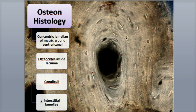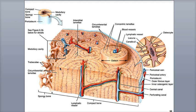In between the osteons are interstitial lamellae, which are the remains of older osteons. Surrounding the diaphysis are circumferential lamellae, which are connected to the external periosteum by perforating or Sharpey's fibers. The arrangement of the osteons helps provide the strength and durability of compact bone — running in the same direction and parallel with the diaphysis shaft, which helps resist bending or breaking.